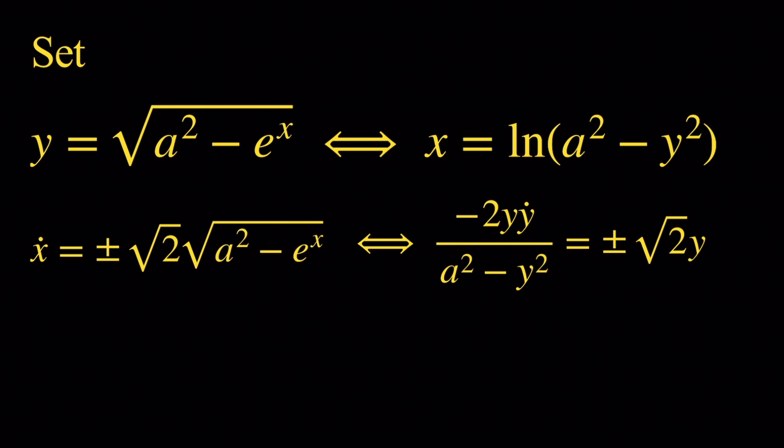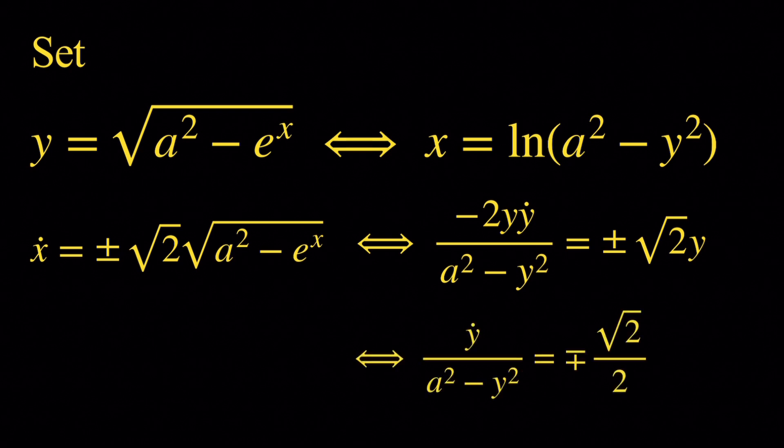Now we have a separable differential equation. This is equivalent to y-dot over a squared minus y squared equals plus or minus root 2 over 2. The reason we were able to divide both sides by negative 2y is because y cannot be 0. If y equals 0, then x would be constant, and we know our original equation does not have any constant solutions.